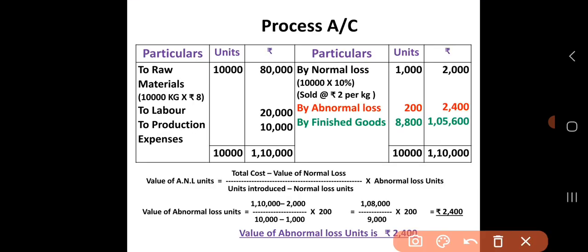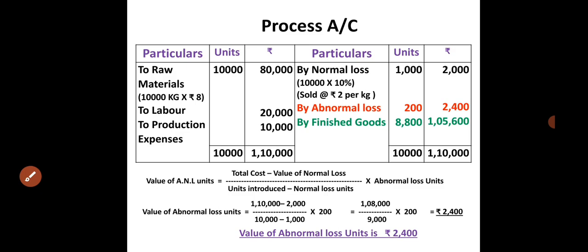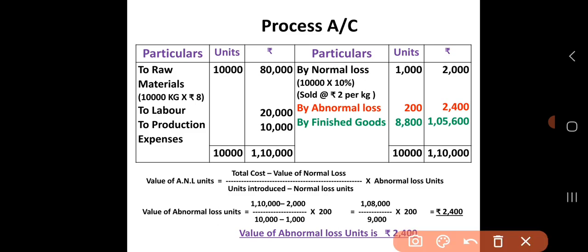Total cost is Rs. 1,10,000. Value of normal loss is Rs. 2,000. Units introduced is 10,000, minus normal loss units of 1,000, multiplied by abnormal loss units of 200. So the calculation is: (1,10,000 − 2,000) ÷ (10,000 − 1,000) × 200 = 1,08,000 ÷ 9,000 × 200.